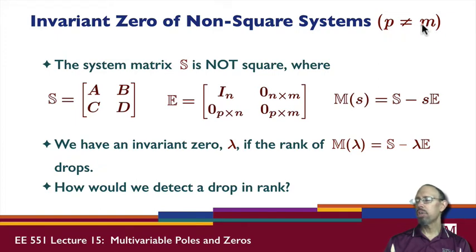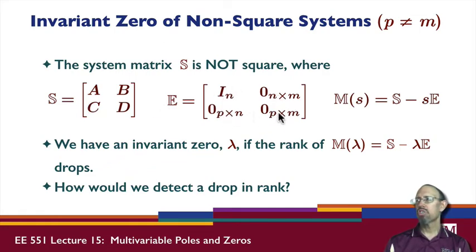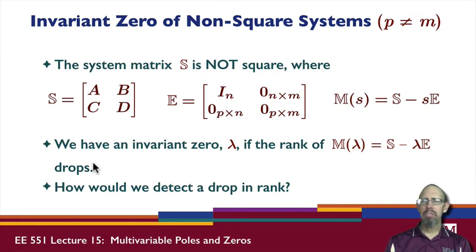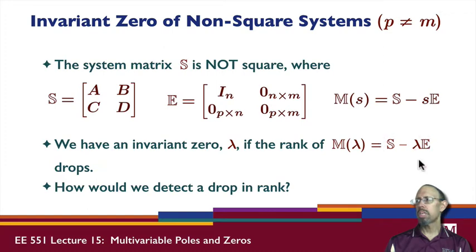When P is not equal to M — that is, we either have more inputs than outputs or more outputs than inputs — the system matrix is not square. We can still define S the same way, and E is now defined to account for the non-squareness. We can still define M the same way. We have an invariant zero lambda if the rank of that matrix drops — a different problem than before, since we can no longer compute the determinant of a non-square matrix.